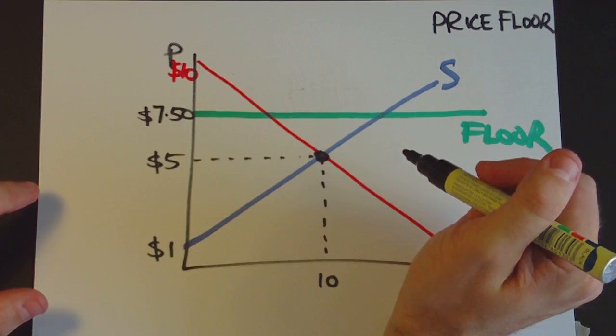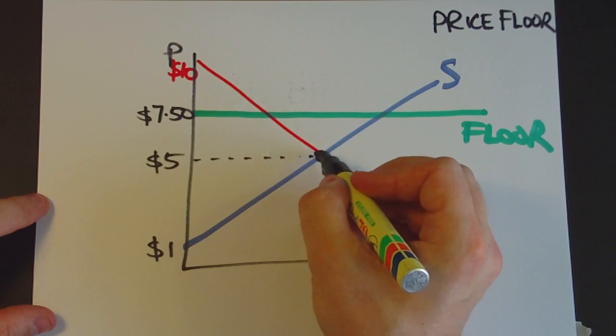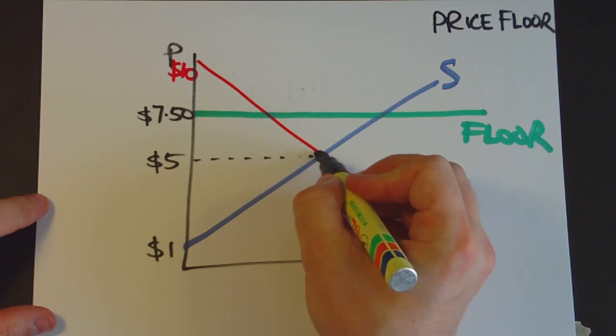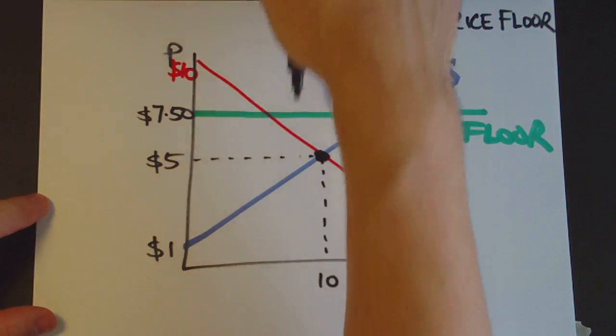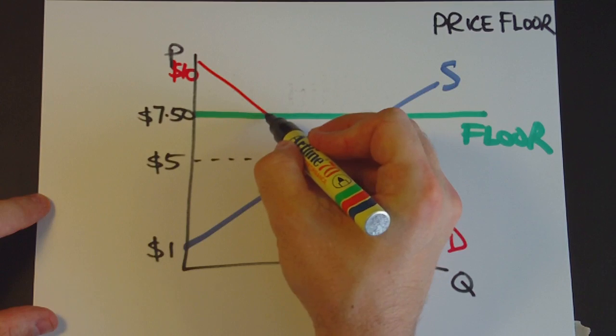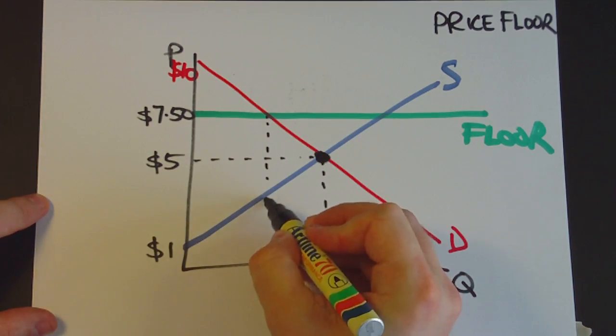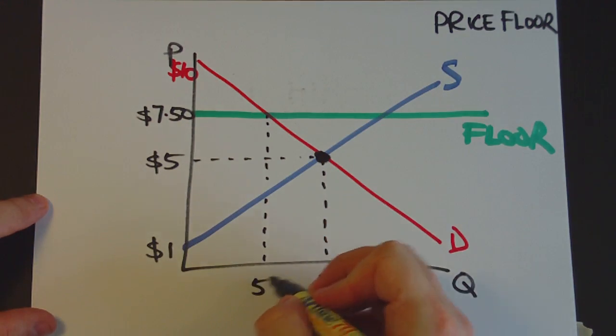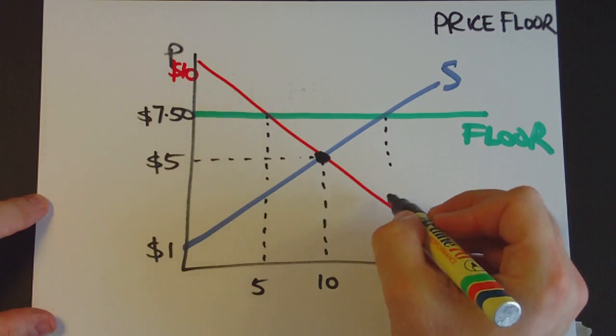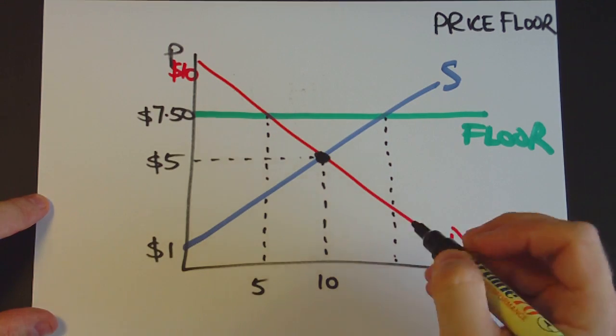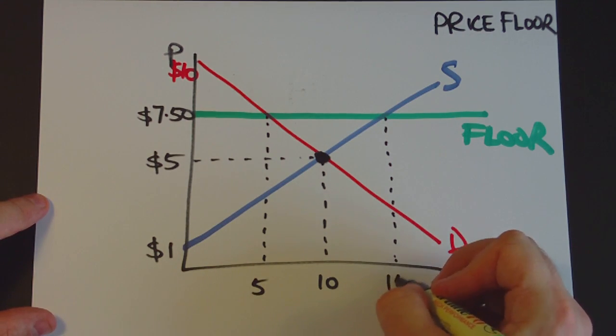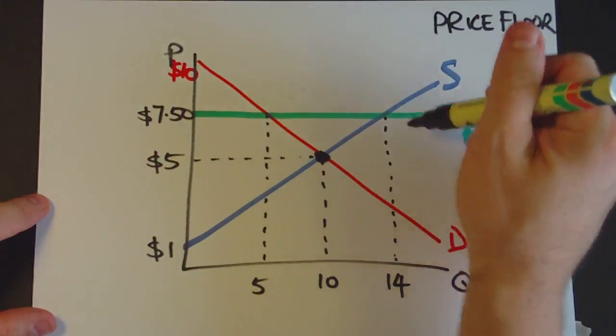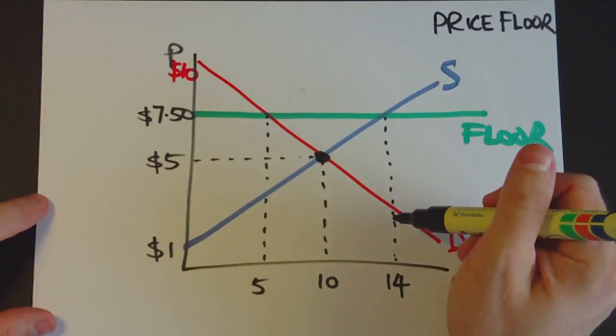Okay, so where will the market actually operate at? Well, if there's no price floor, it would actually operate here, but the price floor prevents it from getting there. So it's either going to be here at a quantity demanded of, say, $5 or at a quantity supplied of, let's say, $14 or so. So it's either going to be one of those two spots.